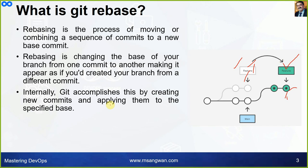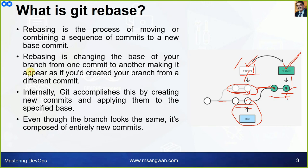Internally, Git accomplishes this by creating new commits and applying them to the base. Look at how it works: you are working here, and there were two additional commits. These two commits are applied here, so you move here internally. From the main branch, this branch had some additional features; you apply those changes and you reach here with the advanced features. Even though the branch looks the same, it is composed of entirely new commits.